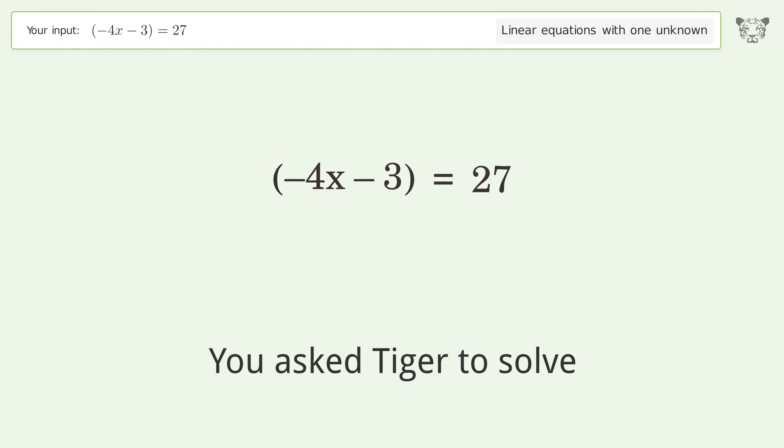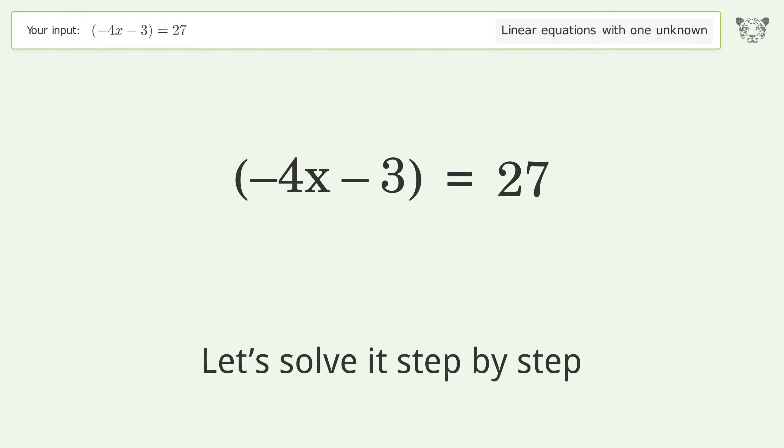You asked Tiger to solve this. It deals with linear equations with one unknown. The final result is x equals negative 15 over 2. Let's solve it step by step.